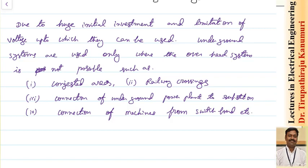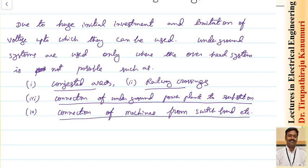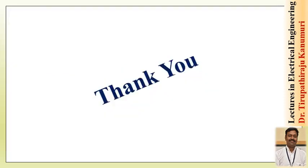Summarizing: due to huge initial investment and voltage limitations, underground systems are used only where overhead systems are not practically possible — for example, congested areas, railway crossings, connections from underground power plants to substations, and connections of machines from a switchboard. For extra-high-voltage transmission, overhead transmission lines are always preferred because bare conductors can be used and the cost is very less. For distribution systems or crossings where overhead lines cannot be laid, we go for underground cables.